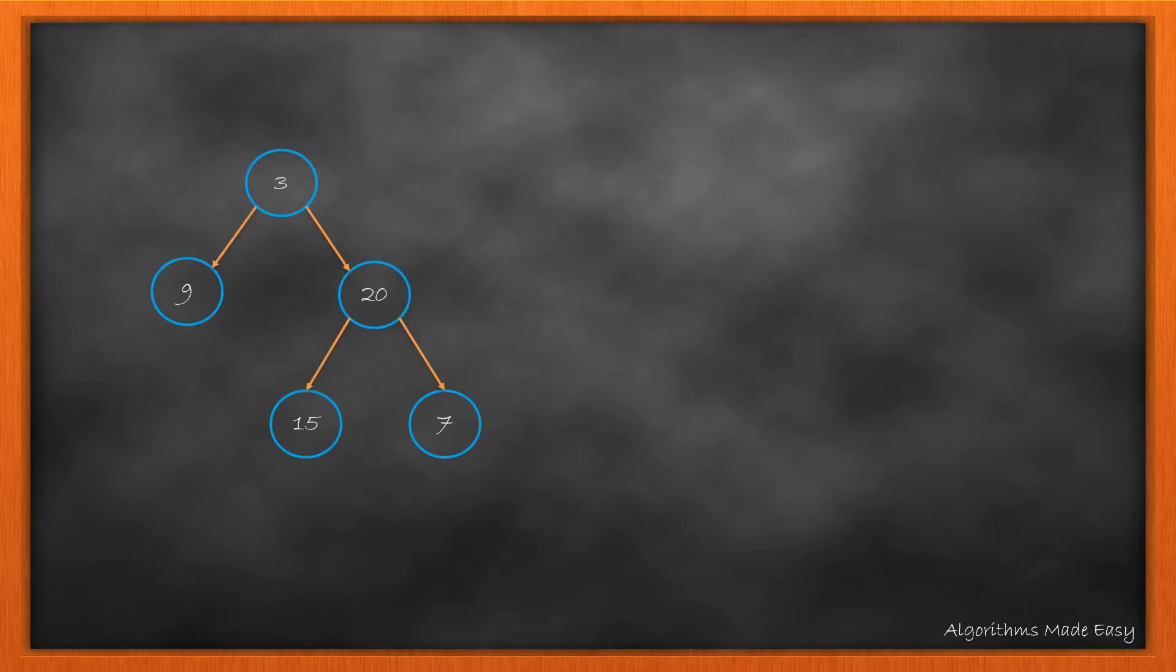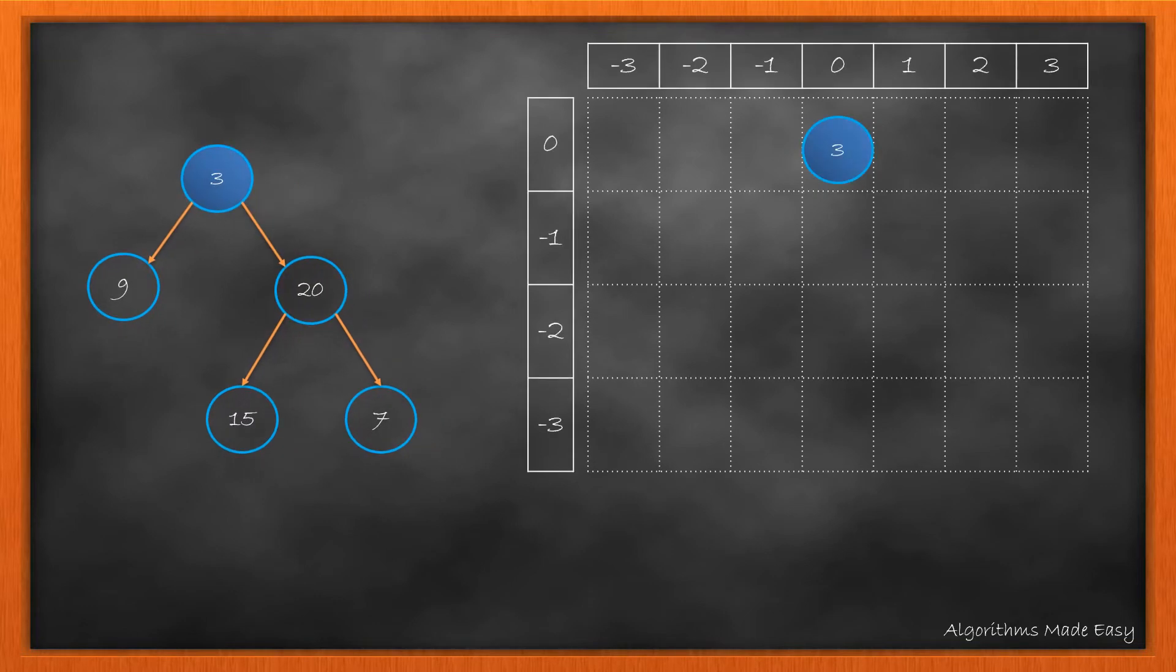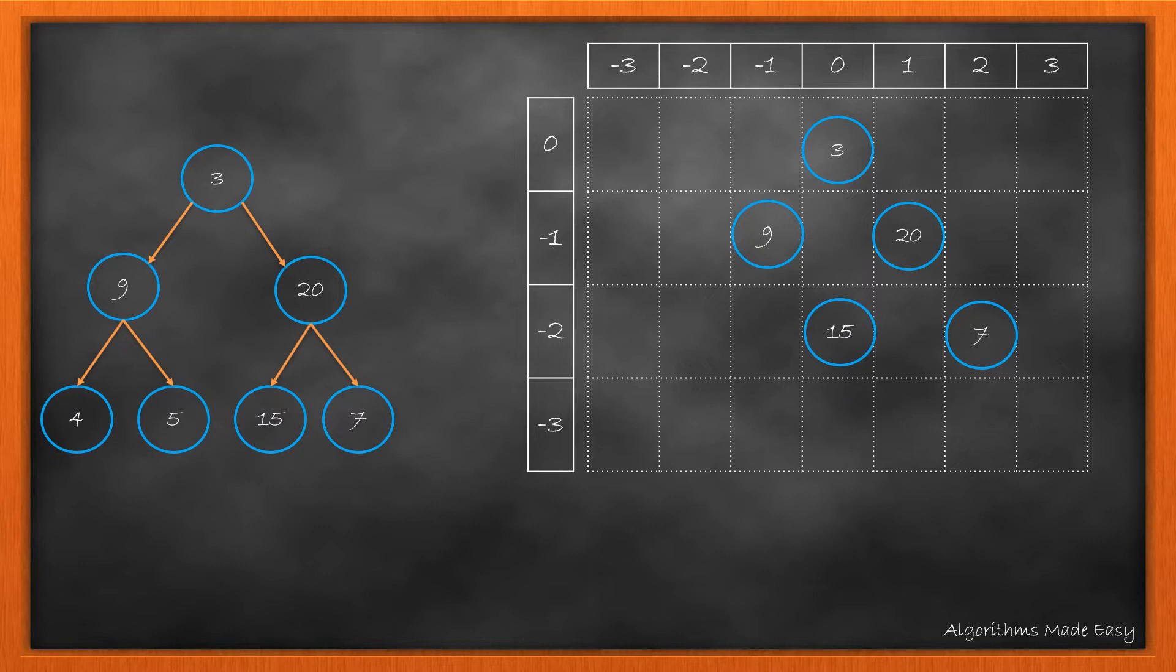Let's take this tree and find the coordinate of the nodes. For that, let's take a grid where we have x and y-coordinate as shown. The root will always be positioned at (0,0). Nodes 9 and 20 will be at (-1,-1) and (1,-1). Till now, we got one node at one coordinate.